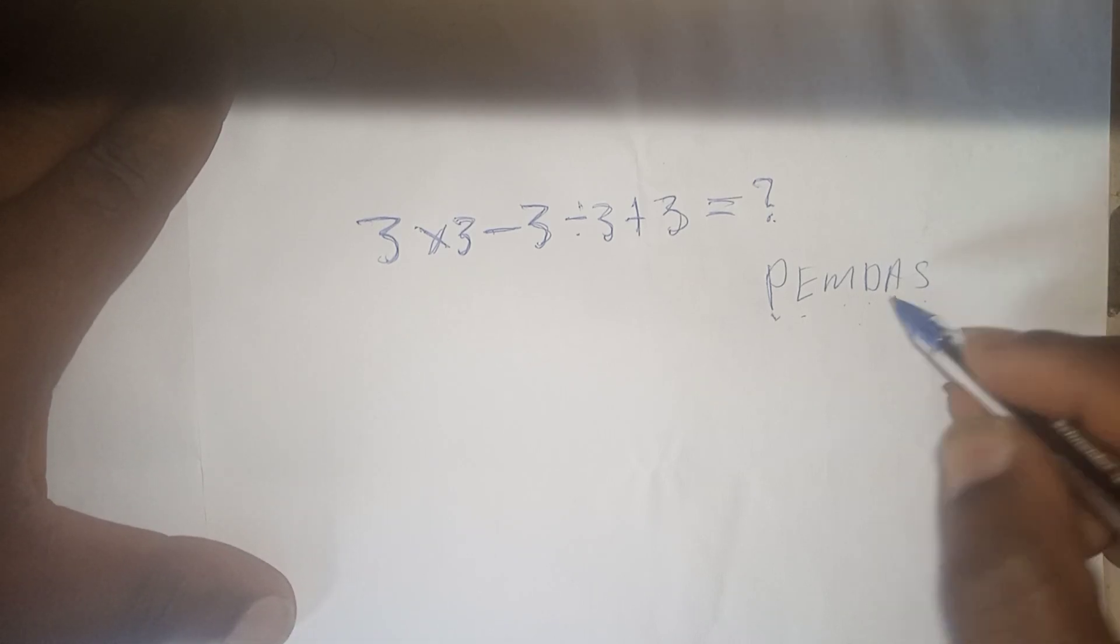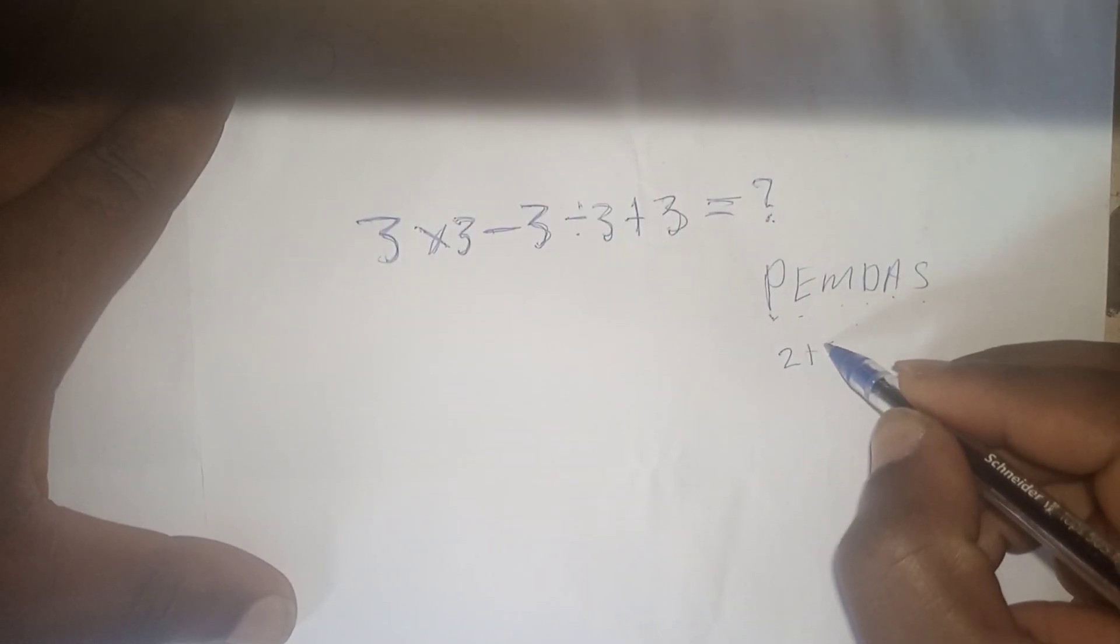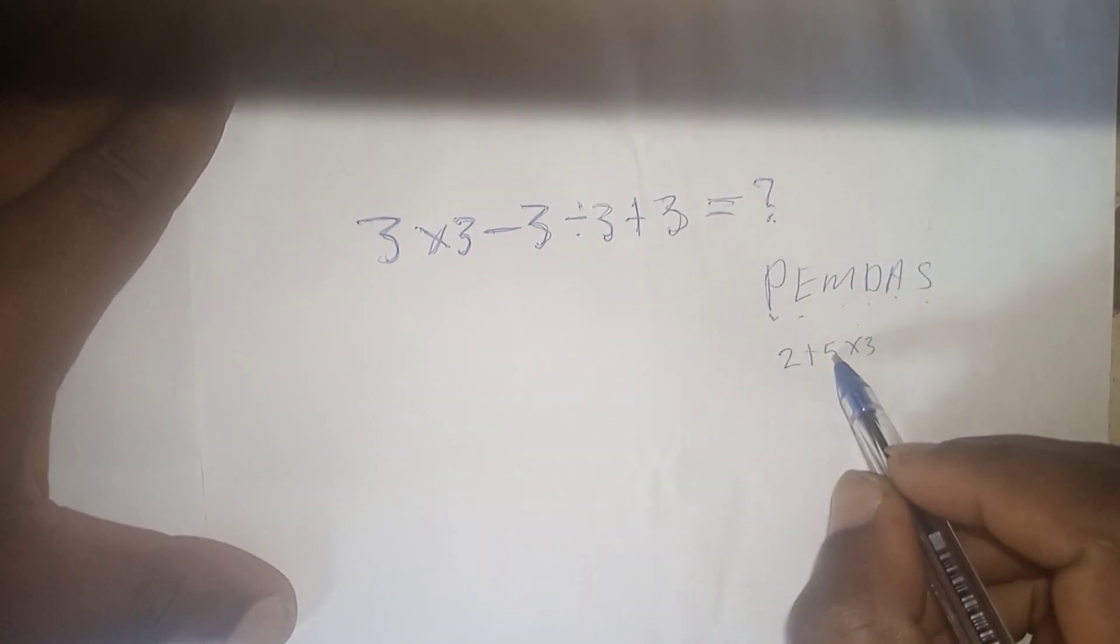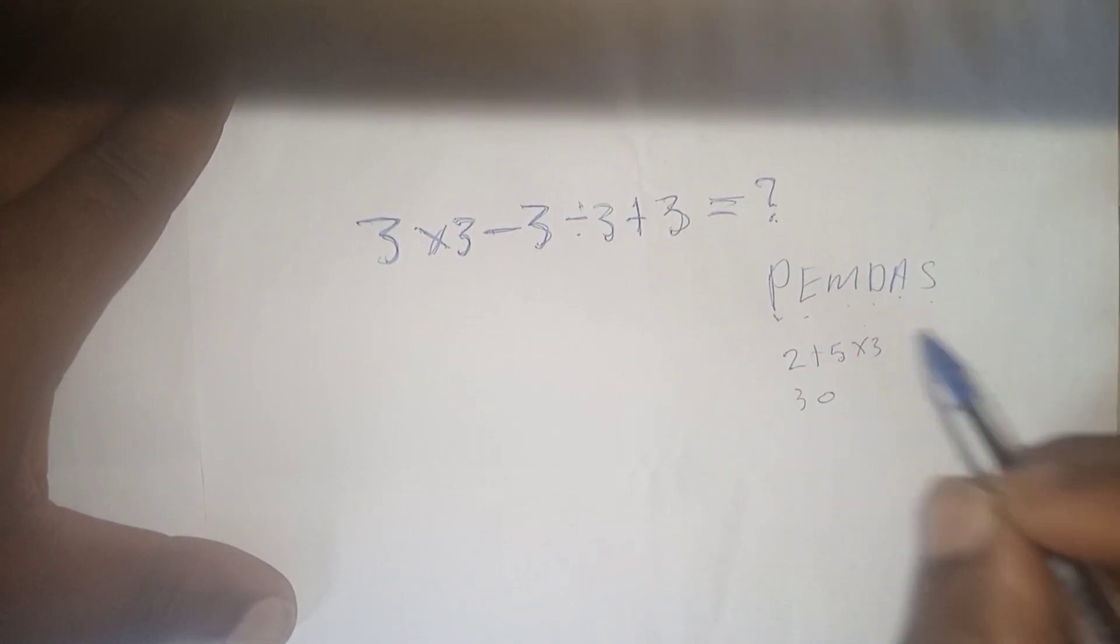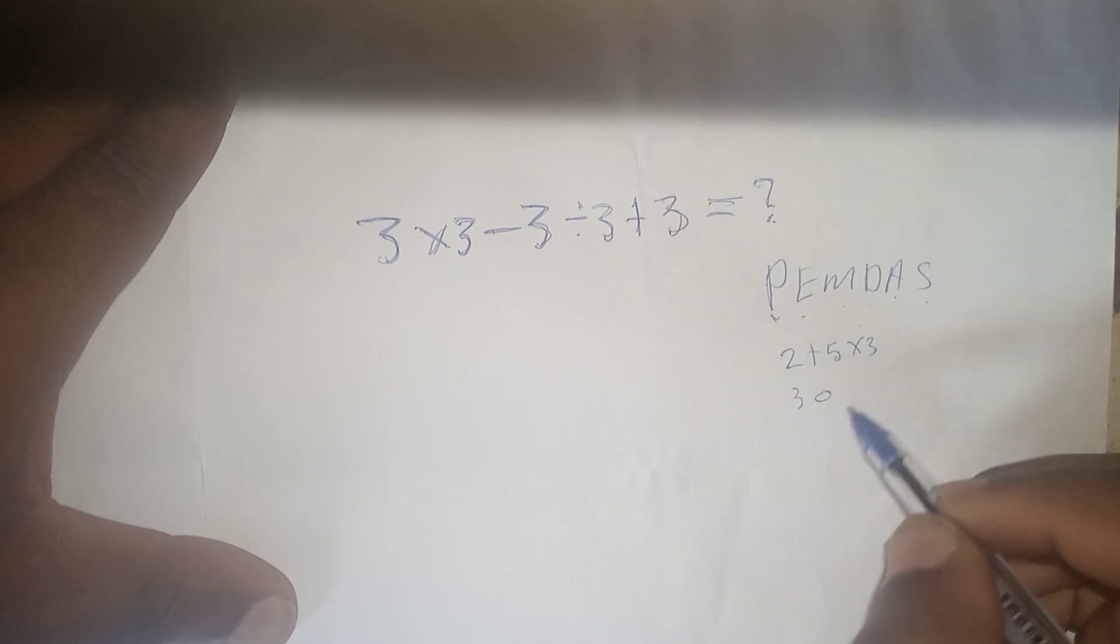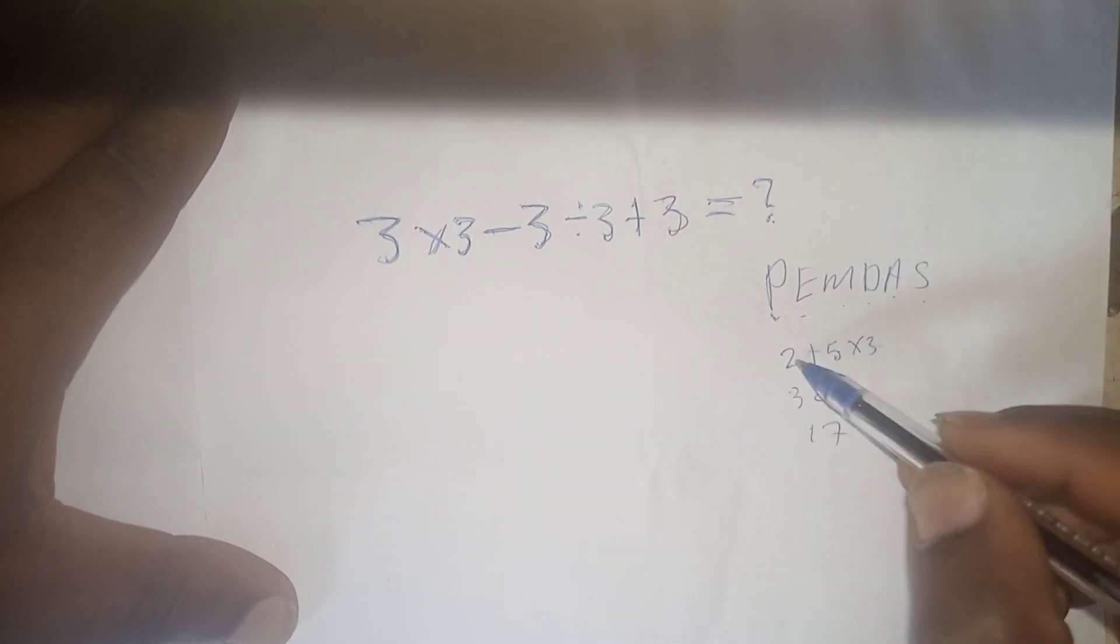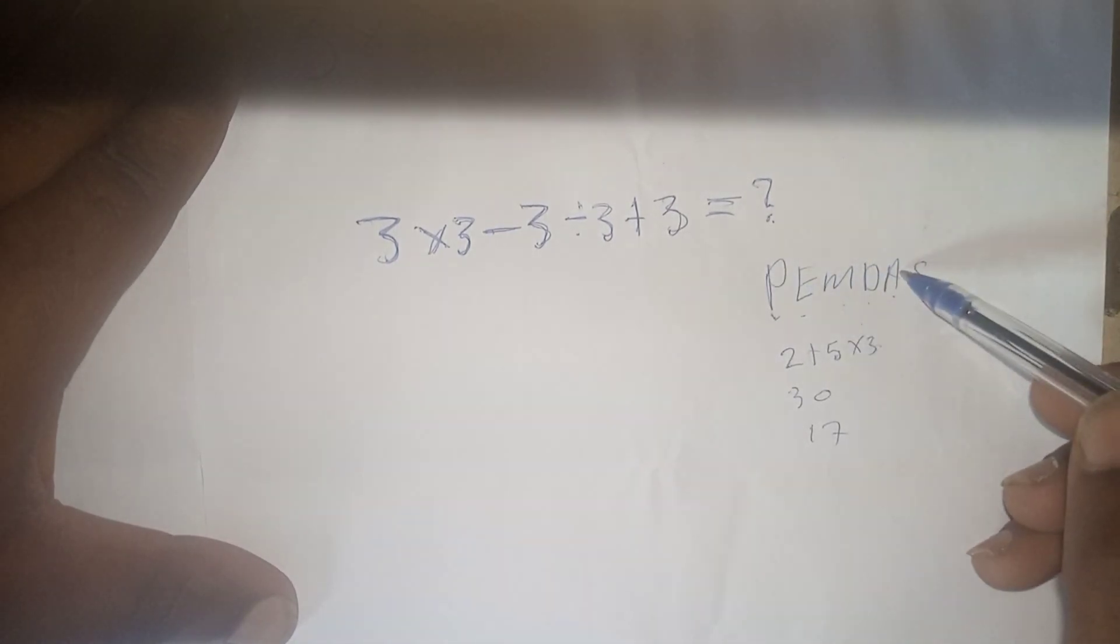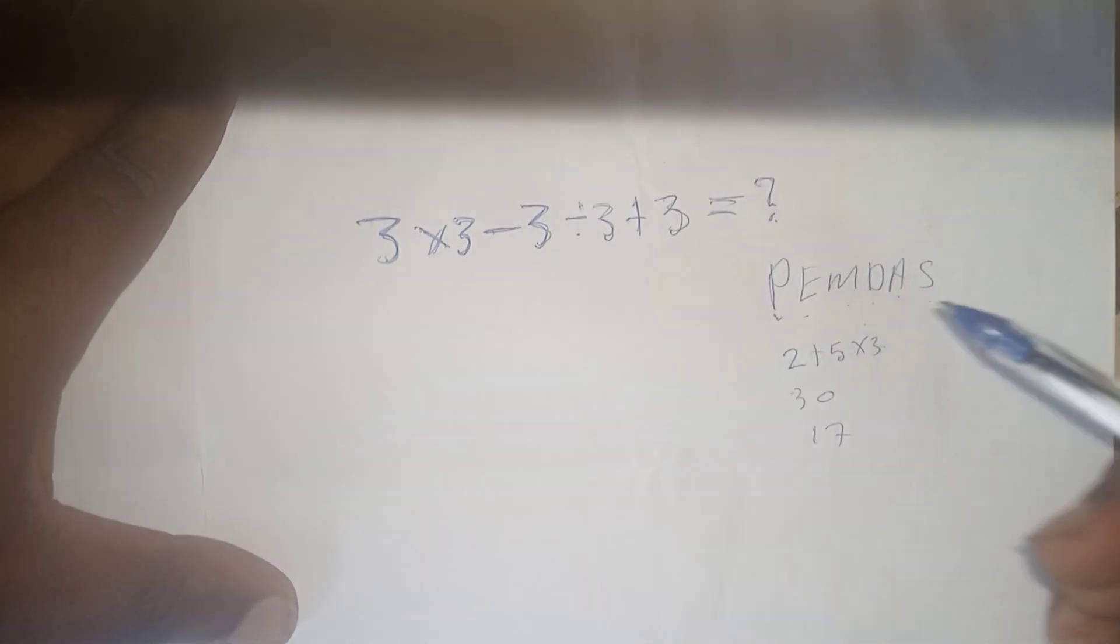So let's say you have 2 plus 5 times 3. If we solve 2 plus 5 first, 2 plus 5 is 7, times 3 is 21. But someone else solves 5 times 3 first. 5 times 3 is 15 plus 2 is 17. So if you solve from this side you have a different answer. If you solve from this side you have a different answer. That is why there is this PEMDAS or BODMAS which is coming to guide us in solving mathematical equations so that we will always have the same answer.